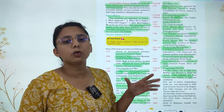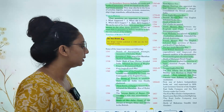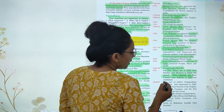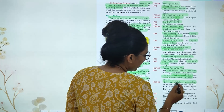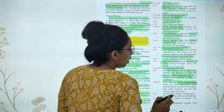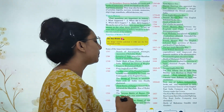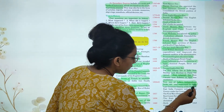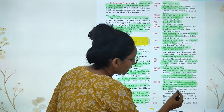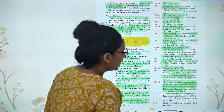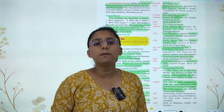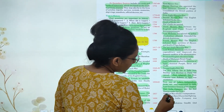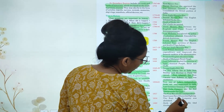In 1857, the first war of Indian independence was fought. It was suppressed in 1858, and the last Governor of the English East India Company was replaced by the first Viceroy under the Crown.